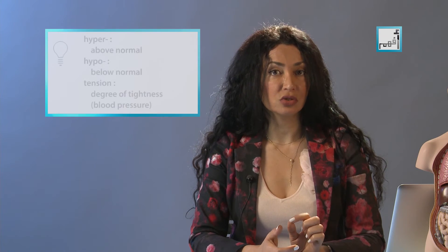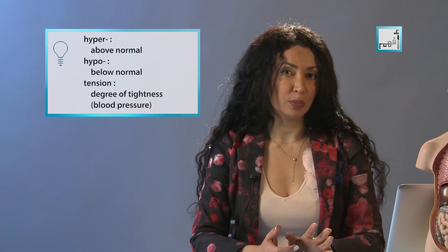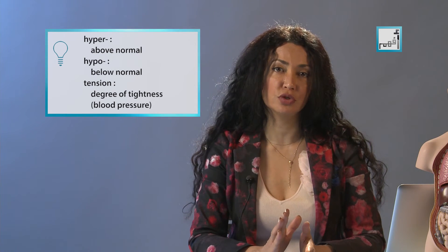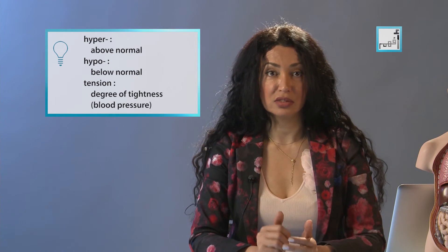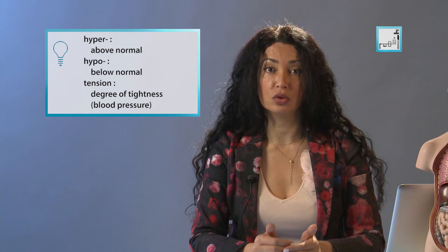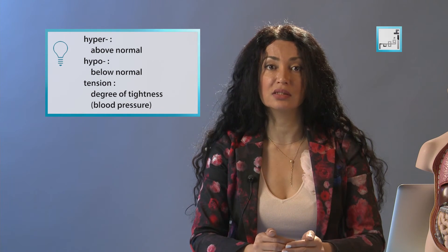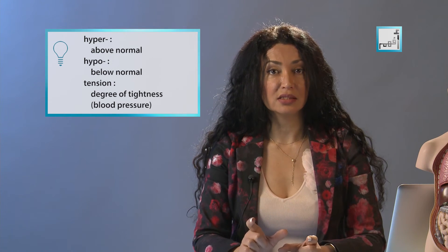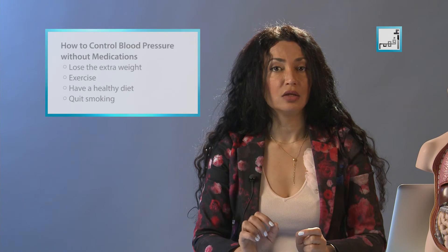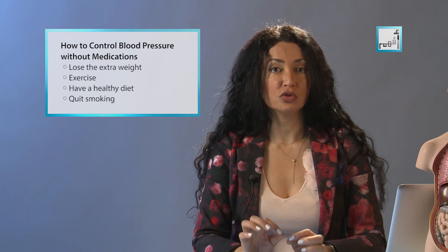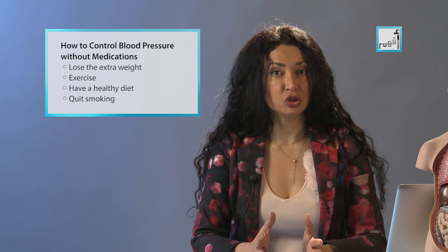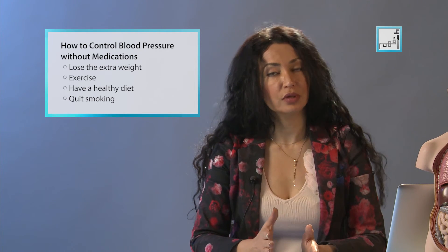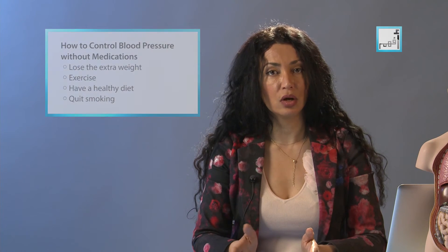A single high reading does not necessarily mean that you have high blood pressure. However, if readings stay at 140 over 90 or above — so the systolic is 140 or above, or the diastolic is 90 or above — and that's over time, this is a sign that you should start treatment. A treatment program will almost always include lifestyle changes and often prescription medications for those with readings of 140 over 90 or higher.